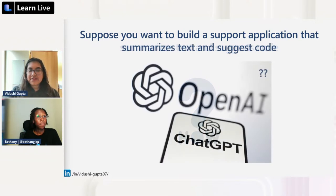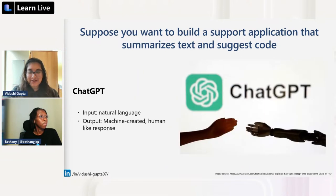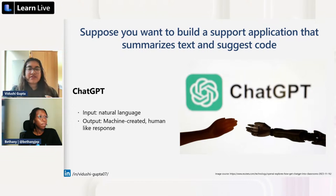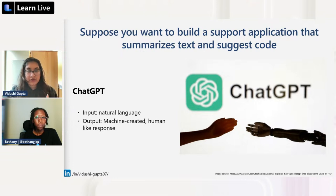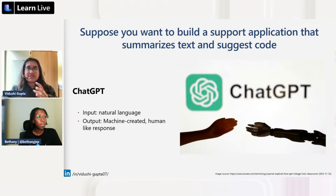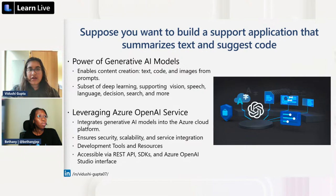With all the AI we have in our phones and laptops, everyone is thinking about ChatGPT. You could use ChatGPT to build a support application like this. The reason you'd think of ChatGPT is that it takes a natural language prompt — literally how you talk — and gives you a machine-generated but human-like response, explaining things just as any human would.